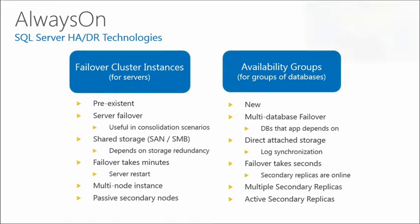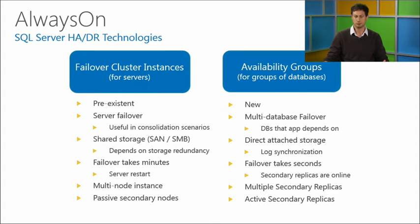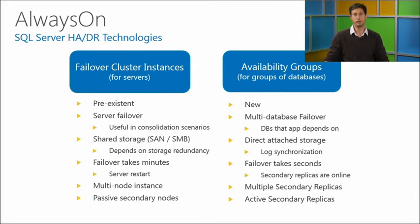With Availability Groups, we support multiple secondary replicas. In SQL Server 2012, we support up to four secondary replicas, with a maximum of two synchronous. Secondaries can be active — you can use them for read workloads, reporting scenarios, or SharePoint scenarios requiring read-only access. You can also offload backups to secondary replicas, since taking backups is IO-intensive on the primary. This way, you make use of that secondary hardware for something beyond just waiting for a failover.